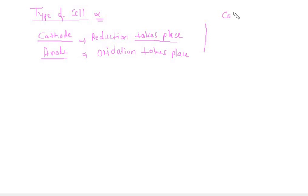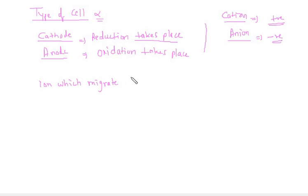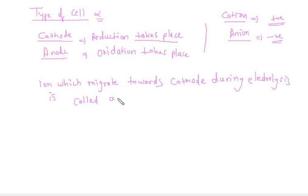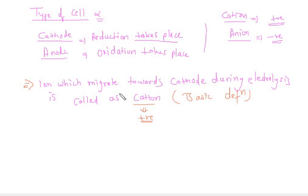Even teachers generally say in school that cation is positive in charge and anion is negative in charge. I would like to tell you about cation and anion. The ion which migrates towards cathode during electrolysis is called a cation. This is the basic definition — you have to keep this in mind. The ion which migrates towards cathode during electrolysis is called a cation, and it was found to be positive.